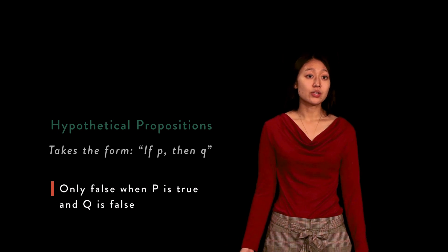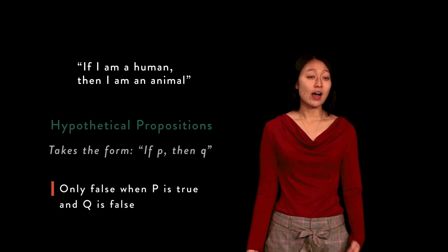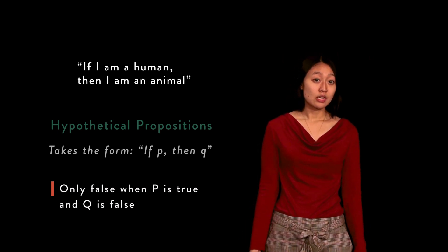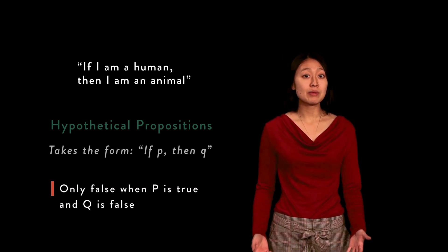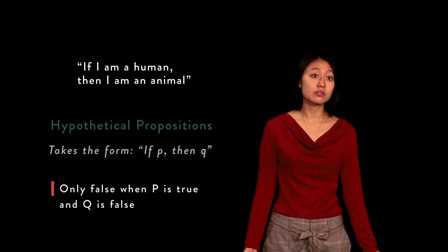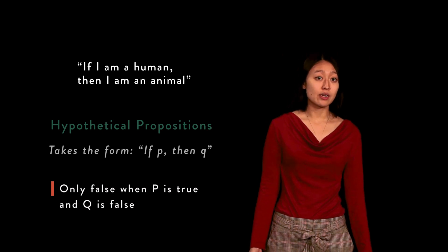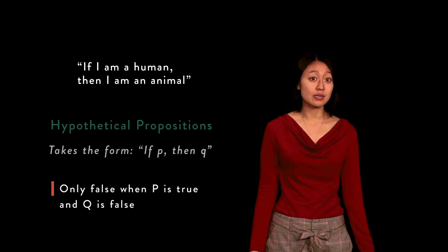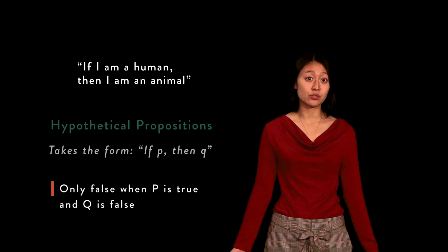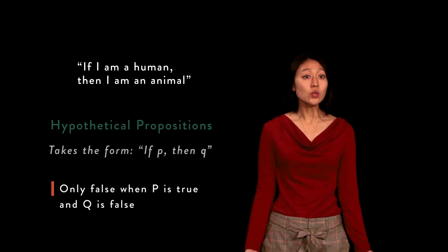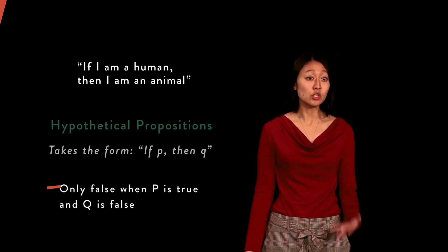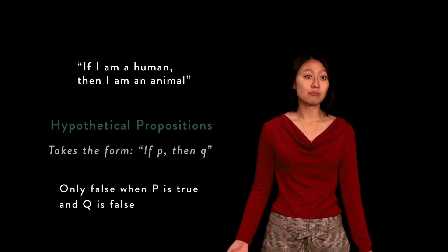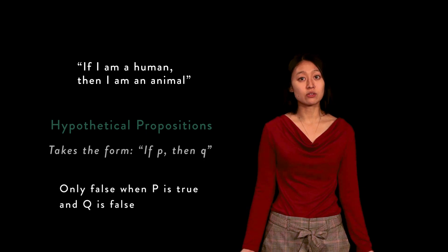For example, the hypothetical proposition 'if I am a human, then I am an animal' is false only when 'I am a human' is true but 'I am an animal' is false. This is because the hypothetical seeks to assert that the first statement cannot be true without the second being true. Because of this, the only situation in which the hypothetical is false is exactly when the supposed initial proposition is true but the second implied proposition still turns out false.